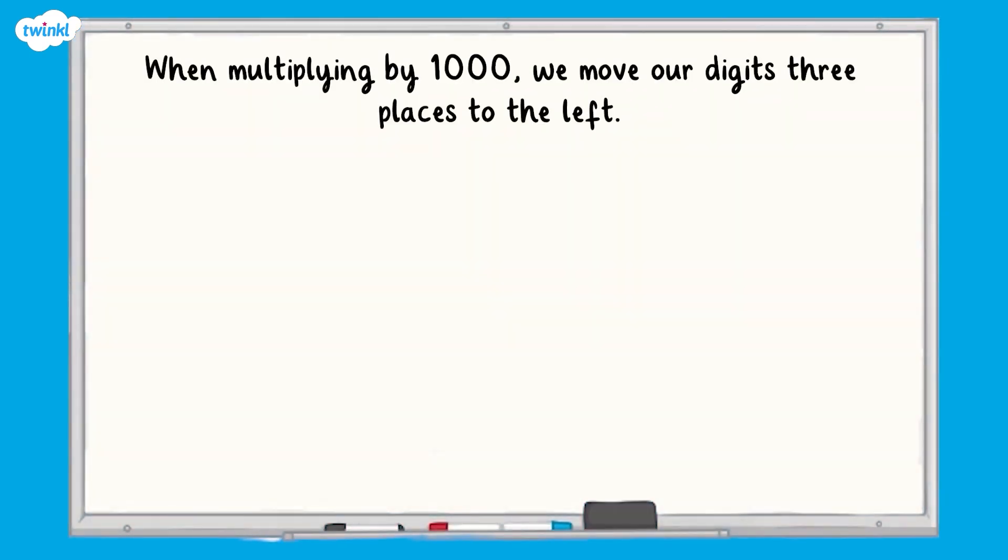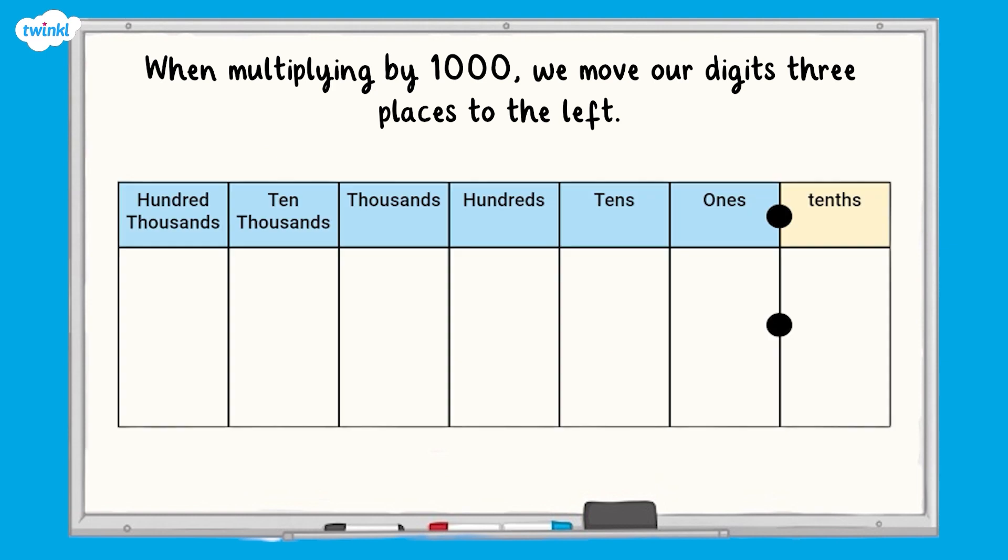So again, we know the rule for multiplying a number by 1000. But this rule does not only apply to integers, which are whole numbers, as we can also use this rule to help us multiply decimal numbers.